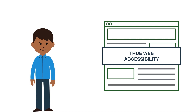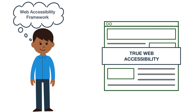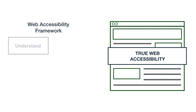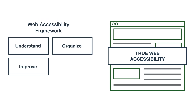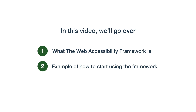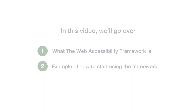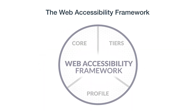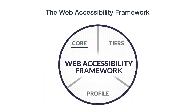To help organizations successfully incorporate accessibility, the Web Accessibility Framework was created. The Web Accessibility Framework is a way for all organizations to understand, organize, improve, and communicate web accessibility. The Web Accessibility Framework is made of three parts: the core, tiers, and profiles.